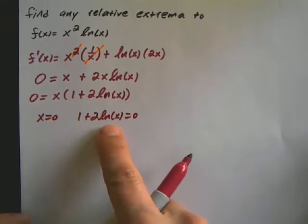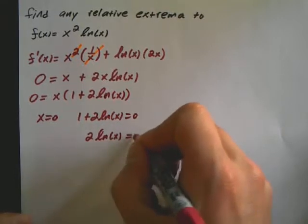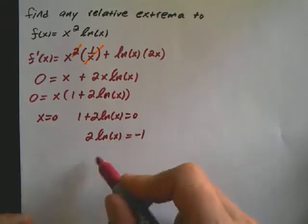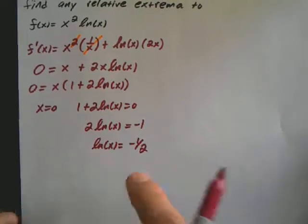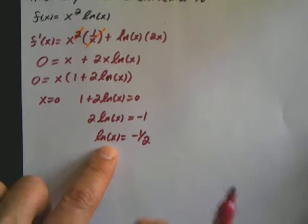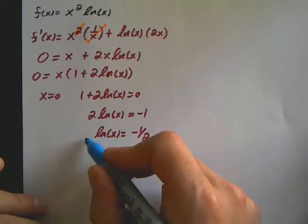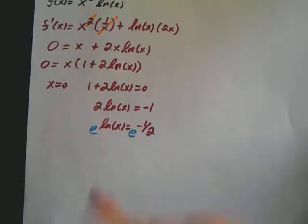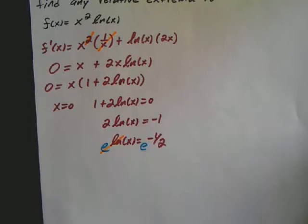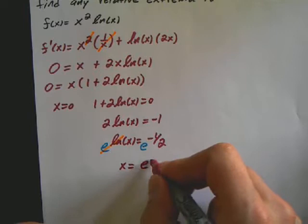I want to isolate ln. So I'm going to subtract the 1 over. Divide both sides by a 2. And now to undo an ln, because I want to get x by itself, you have to take e to both sides. So e raised to this side and e raised to that side. This cancels it out. So my other critical point is going to be e to the negative 1 half.